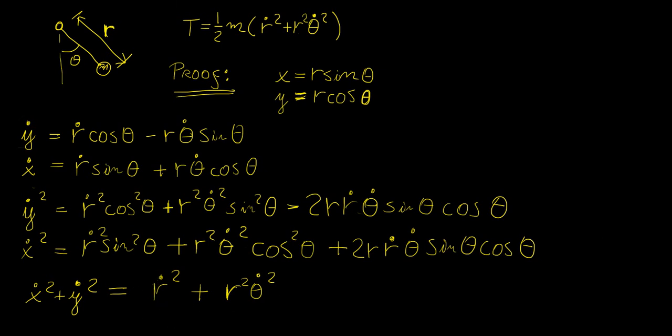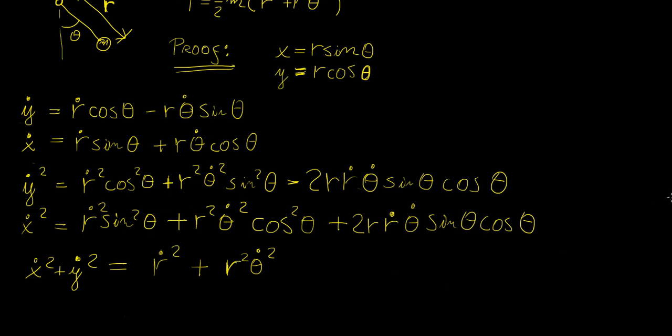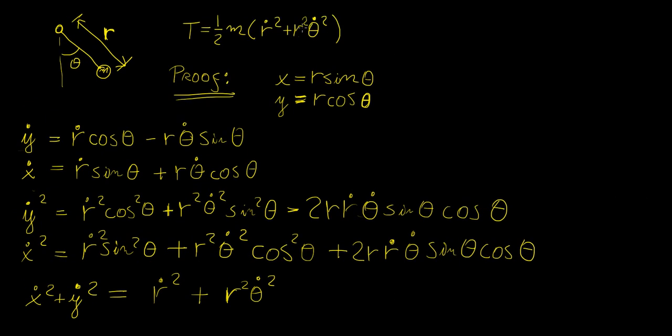Now the reason this is so important is because this allows us to write the kinetic energy in this form, and the reason why this expression is so useful is because it is a standard result. Basically this is the kinetic energy in polar coordinates. So for a system that is moving in two dimensions, and we want to express its motion in polar coordinates, this is what the kinetic energy term looks like.